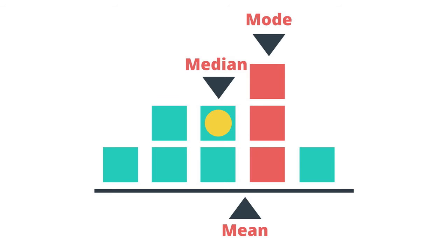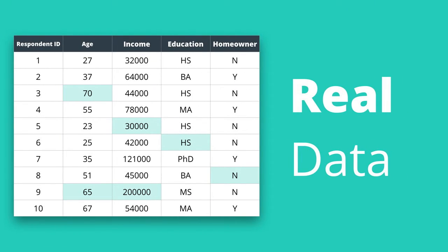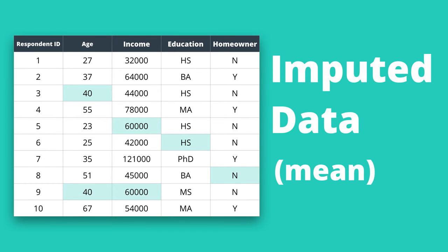If you remember, in one of our previous segments, we showed what the real ages were for respondents number three and number nine. I've gone ahead and added in the rest of the real data for the purpose of our example. If you recall in that segment, the average or mean age for the known respondents was 40. If we impute 40 for all the missing age values and impute the average income for each of the missing income values, which in this case is 60,000, we can then see the effect that it has in comparison to using the delete method for dealing with the missing data.